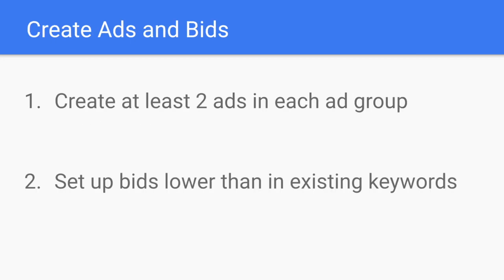There are two more things. First, create at least two ads in each ad group. You won't be asked to create a headline, but you will have to create two different descriptions — make these descriptions really compelling and really working for you. It's not difficult to create a couple of descriptions across a couple of ads. Also, set your bids at the ad group level lower than your existing keywords in your account, so you'll be sure that even if there is some overlap, DSA won't compete for something that is much more relevant in your existing keywords.